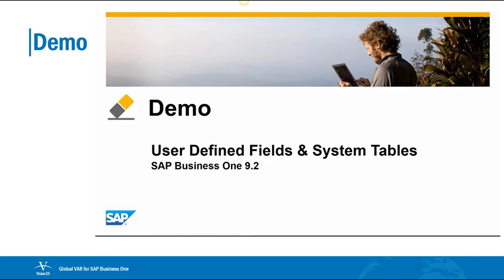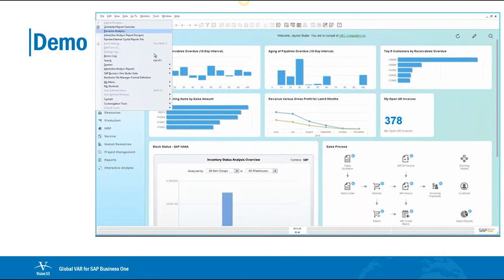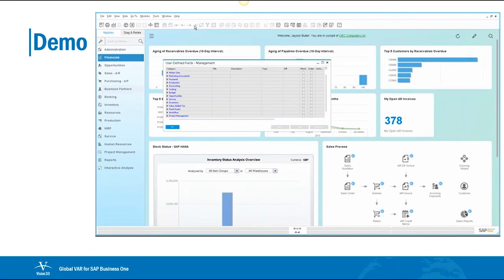So let's see how this is executed in SAP Business One, Release 9.2. We're now logged in to SAP Business One, Release 9.2. Jason is initially going to navigate to Tools, Customisation Tools, and then select User-Defined Fields Management. This will open up the User-Defined Fields Management window, and from here we are able to select the master data to which we would like to attach the user-defined field.